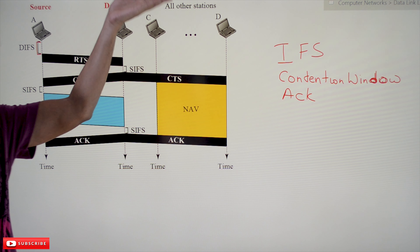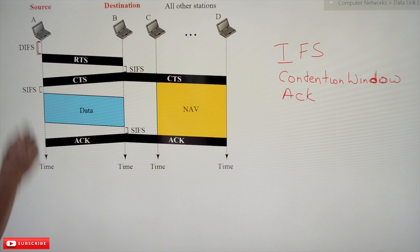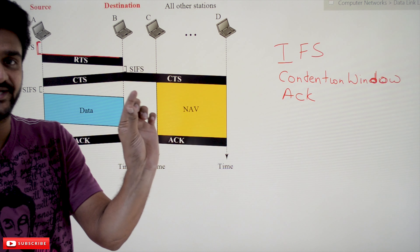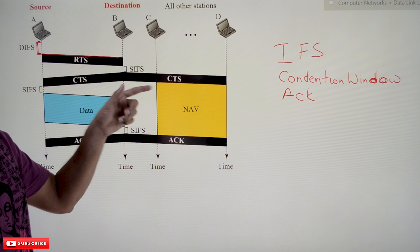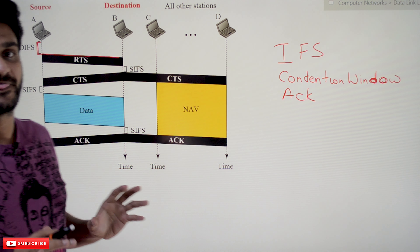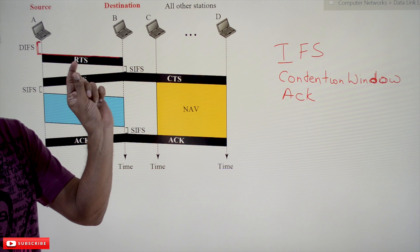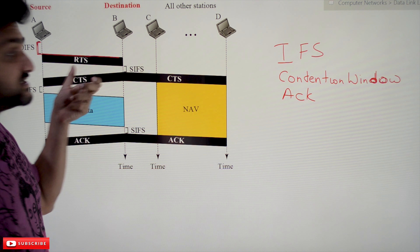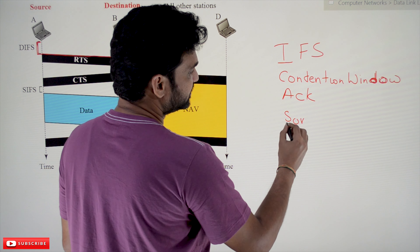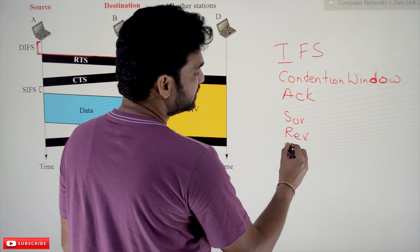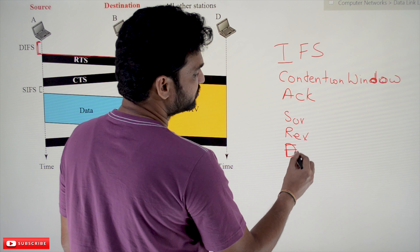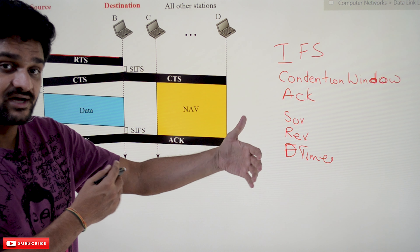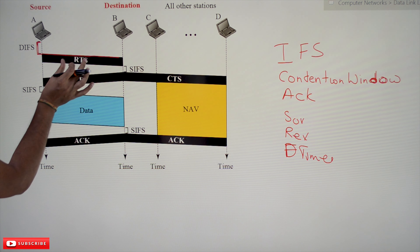The three strategies are: IFS, contention window, and acknowledgments. After DIFS time, the sender transmits an RTS — Request to Send. This is a very short control frame transmitted to the destination. The RTS packet consists of the source address, the receiver address, and the amount of time the sender wants to occupy the channel to send its data between source and receiver.